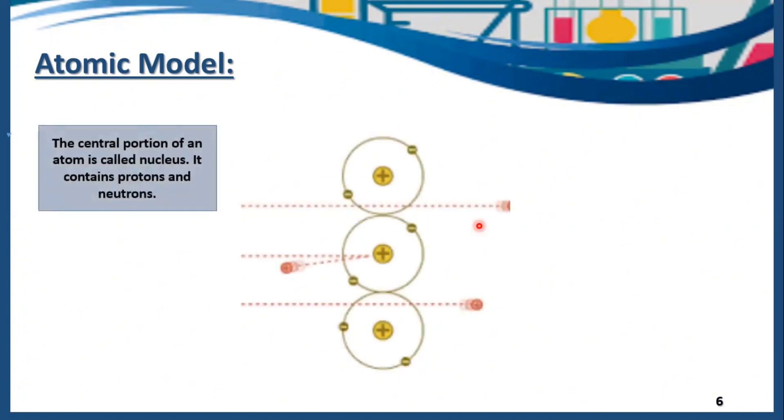In Rutherford's atomic model, the central portion of an atom is called the nucleus. Inside the nucleus, we have protons and neutrons. Protons have a positive charge and neutrons have no charge. That is the reason the nucleus has a positive charge overall.